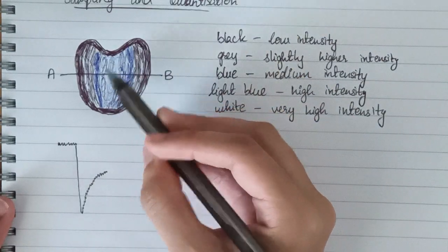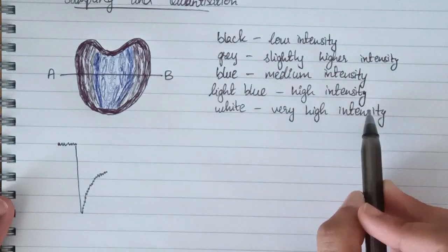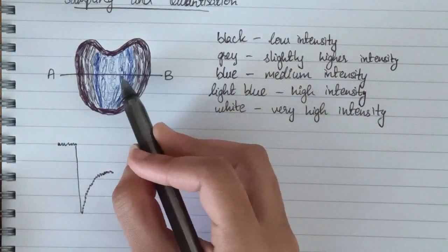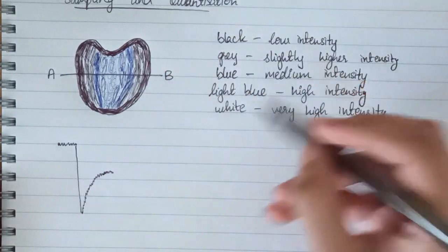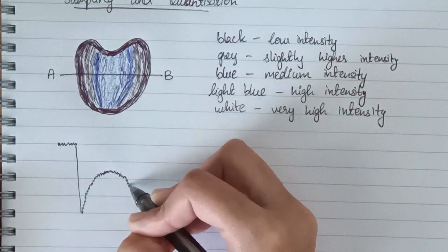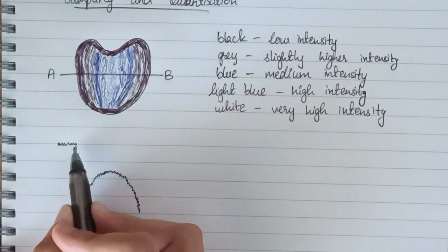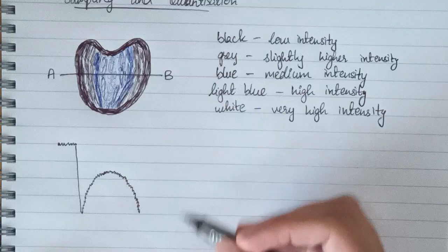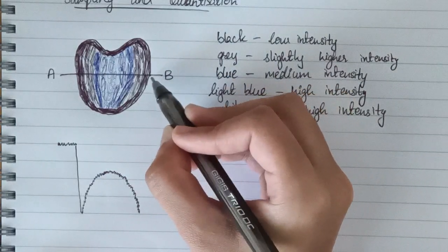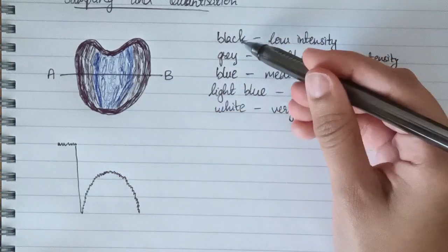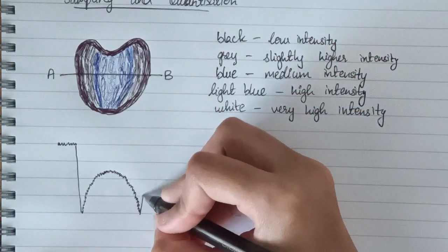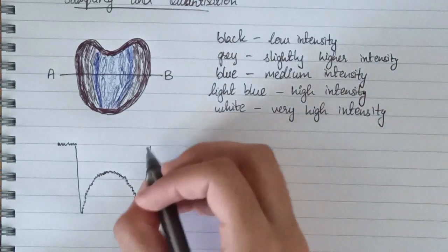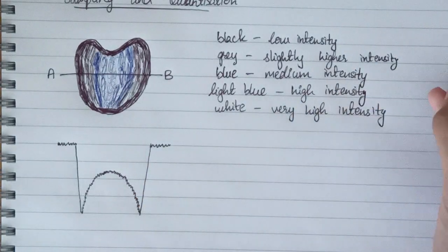As we move to the center of the image it becomes light blue, which is high intensity, so the graph goes up further. When we go towards the end, the intensity value decreases. The tiny noisy lines in the graph represent noise. At this point the intensity value suddenly increases from black to white, and then this region is white color which is very high intensity.